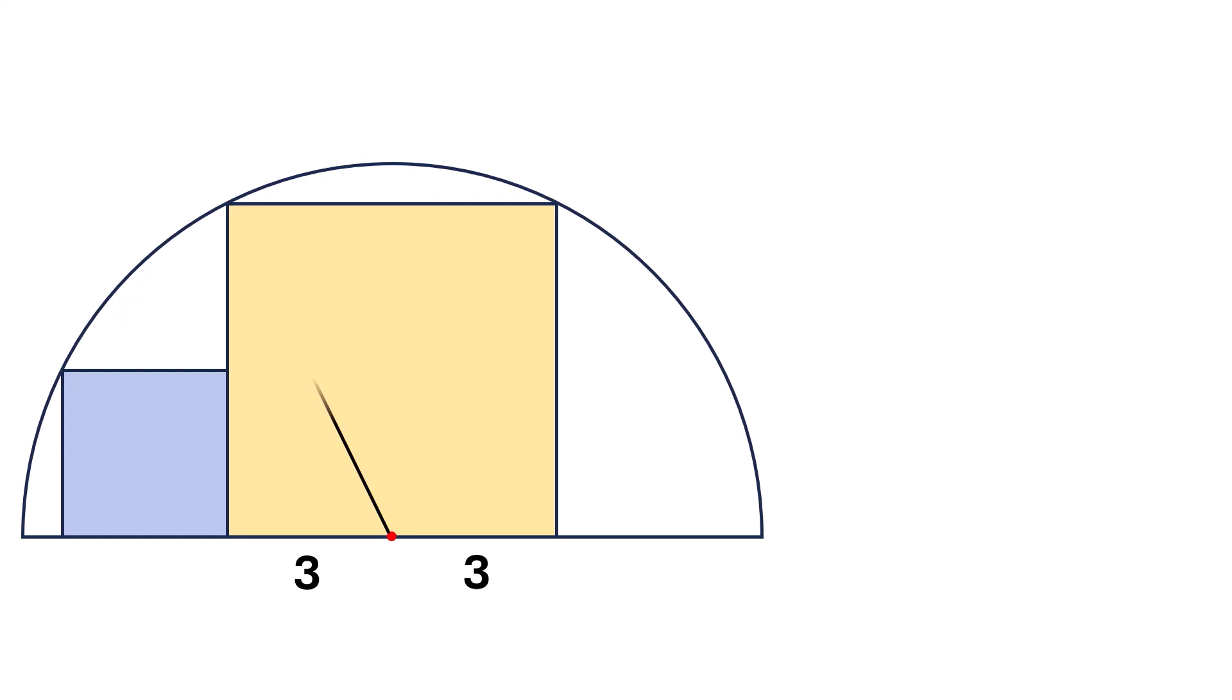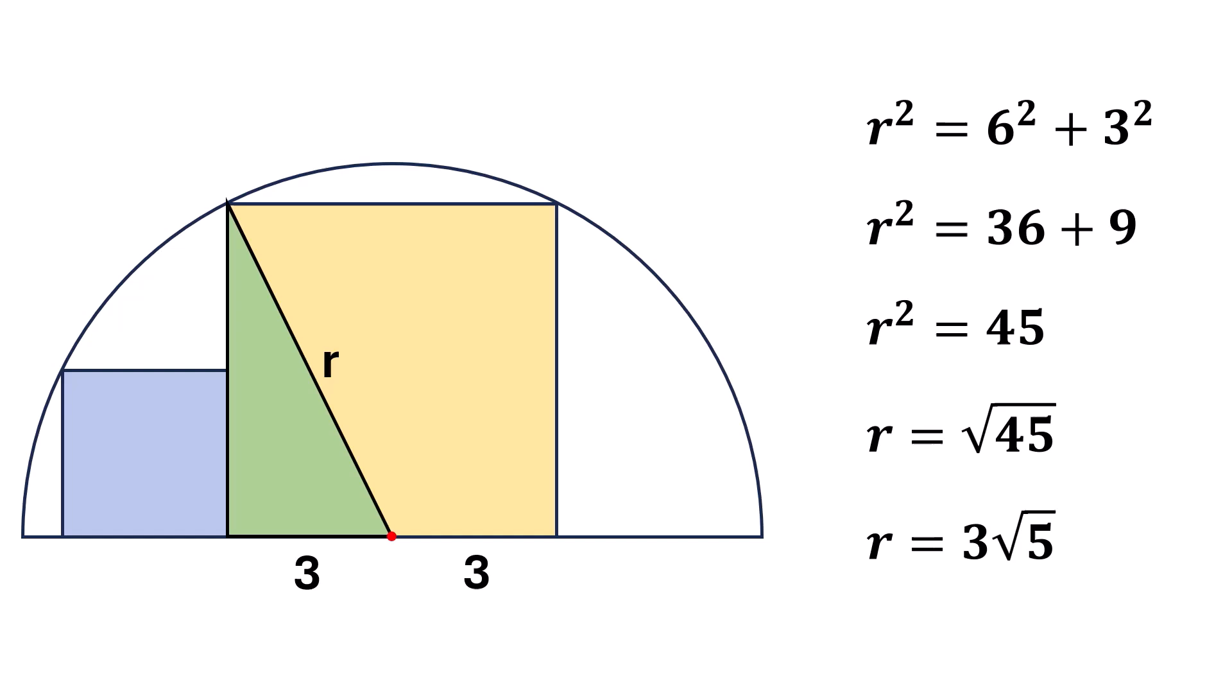This line represents the radius of the circle. Let's call it r. Now, look at this green triangle. Using the Pythagorean theorem, we can write r squared equals 6 squared plus 3 squared. Or, r squared equals 36 plus 9. So, r squared equals 45. Taking the square root of both sides, we get r equals the square root of 45, which simplifies to r equals 3 times the square root of 5.